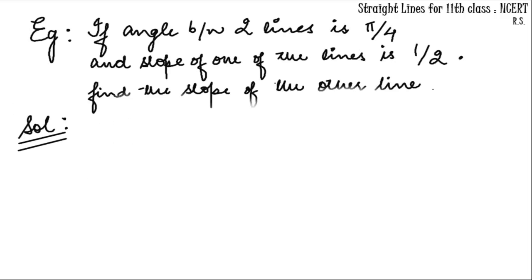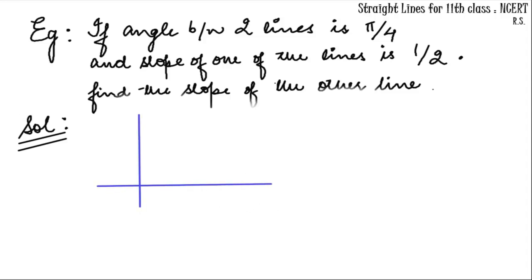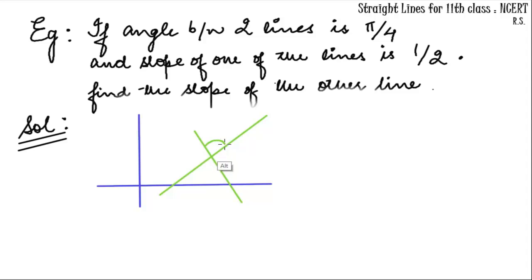Let's see an example: if the angle between two lines is π/4 and the slope of one of the lines is 1/2, find the slope of the other line. We start by setting up the coordinate system and drawing the two lines. The acute angle given is π/4.